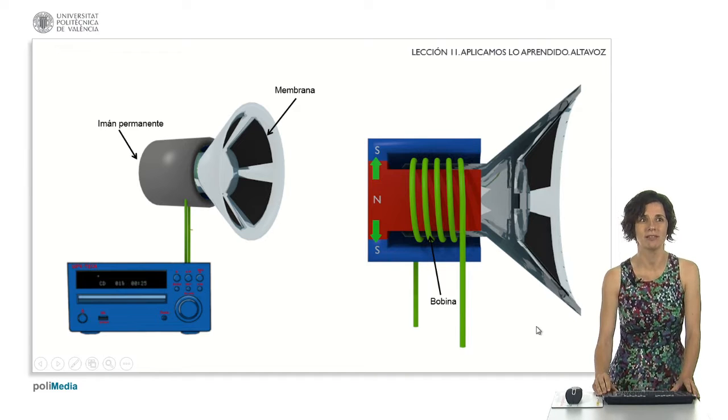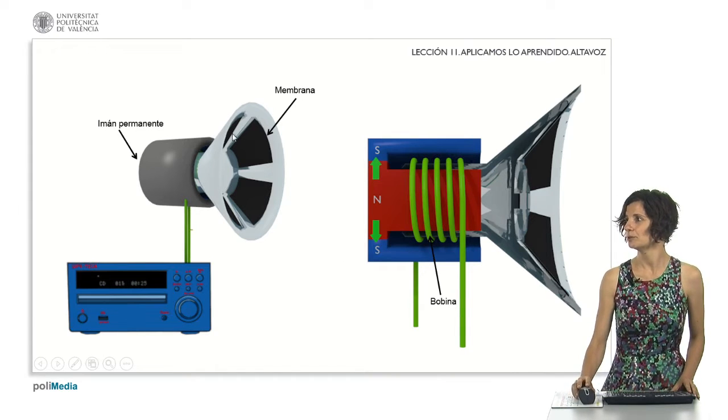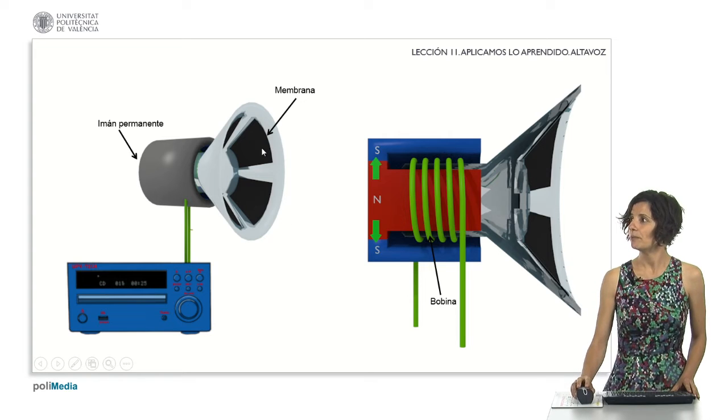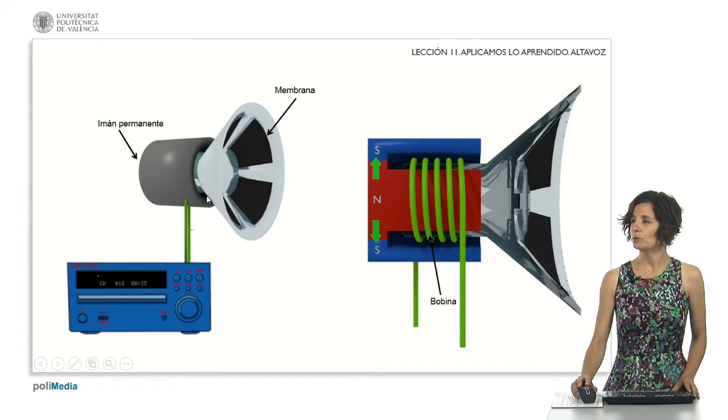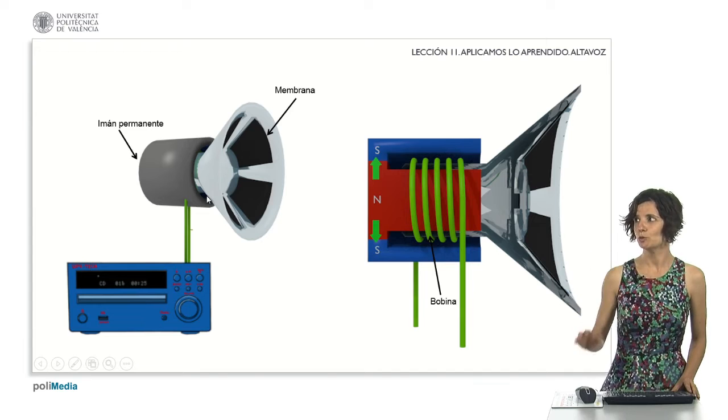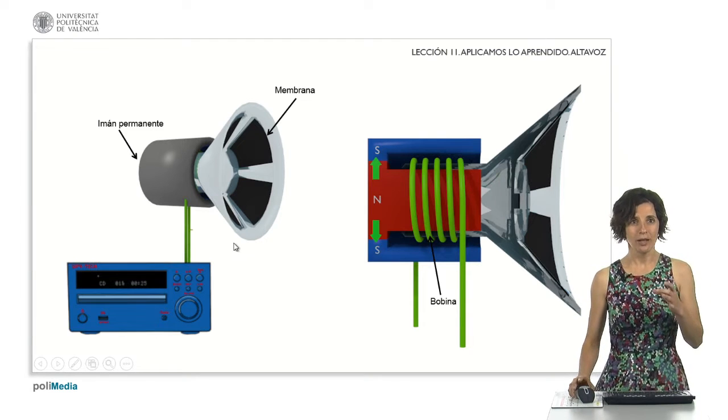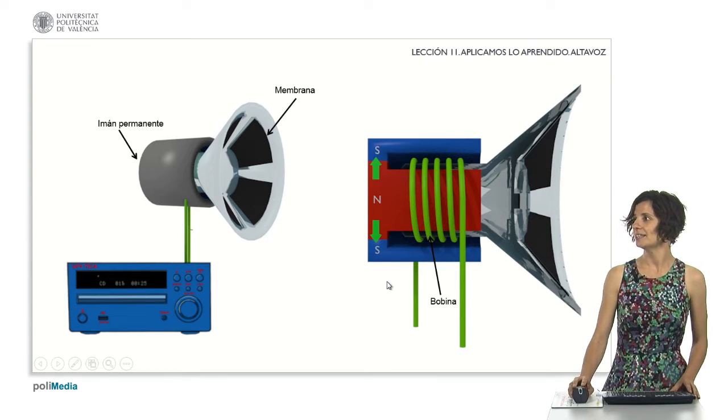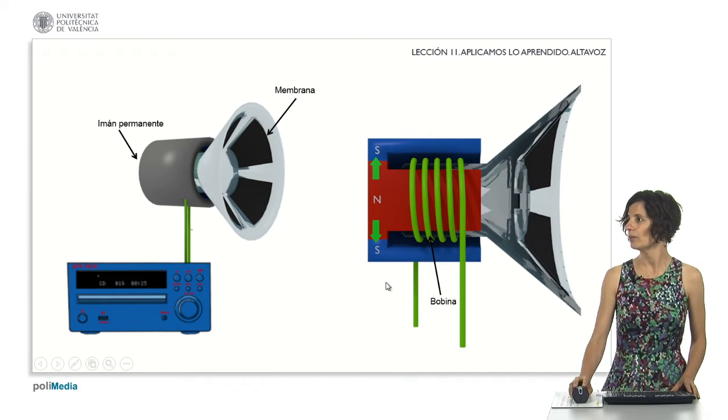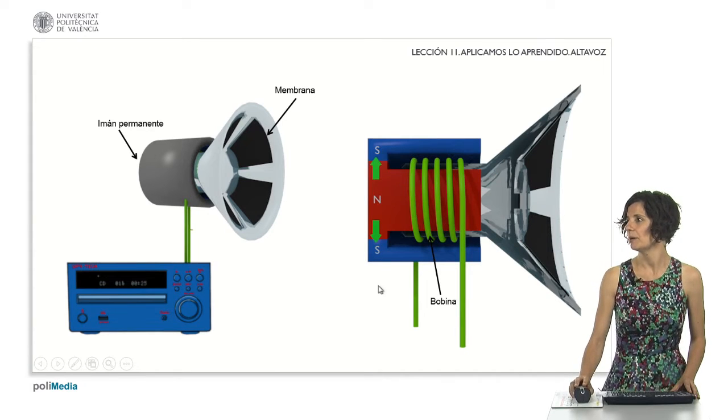The first thing we are going to do is to see what the main elements are. We notice a movable membrane within the cone. The neck fits snugly between the poles of a permanent magnet, resembling a circular crown-shaped magnet. This is more distinctly visible in the image on the right, displaying a cross-section of the speaker. We can see the coil positioned between the north and south poles of the permanent magnet.